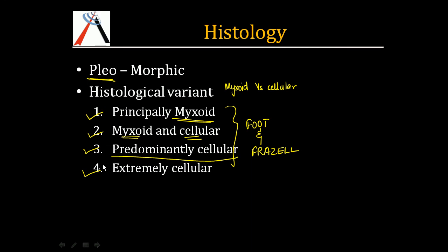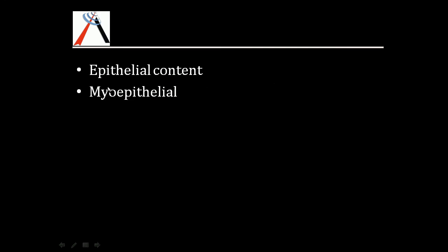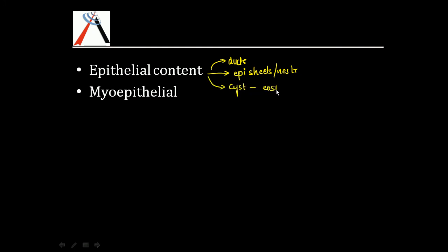Histologically, the tumor is made up of epithelial and myoepithelial components. The epithelial content can be arranged in the form of ducts, epithelial sheets and nests, or as lining of cysts, which are filled with eosinophilic coagulum.